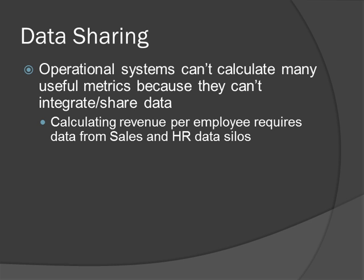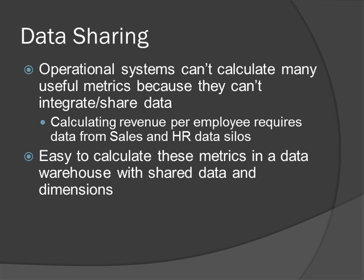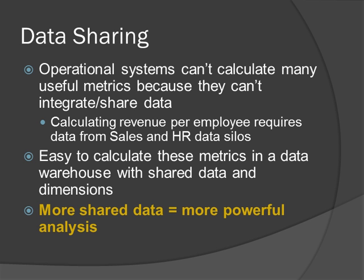For example, a metric like revenue per employee is difficult to calculate with operational systems because you need data from the sales system silo and data from the human resources system silo. In a data mart, it's easy to calculate this metric by combining sales data from the sales data mart and employee data from the human resources data mart based on shared dimensions such as time and employee. The more data that can be shared across business processes, the more powerful your analysis can be.